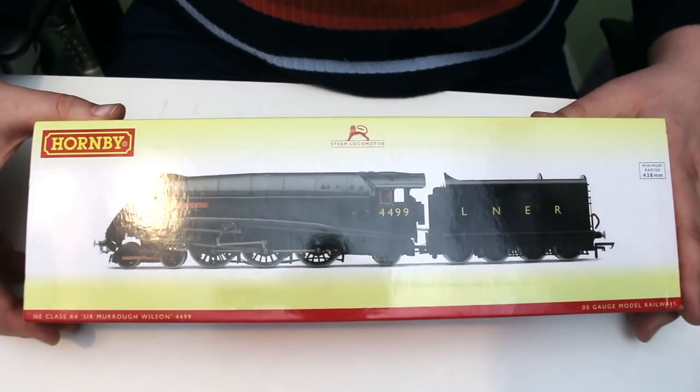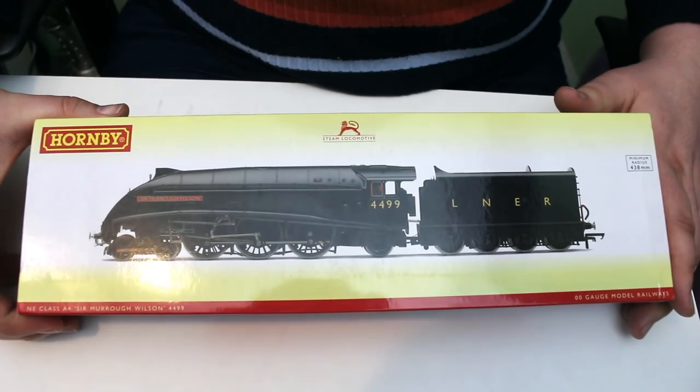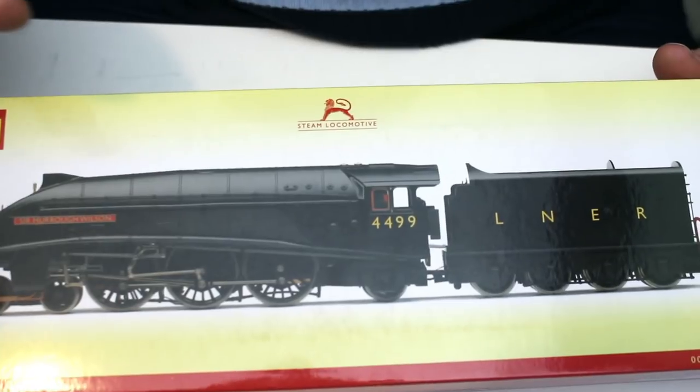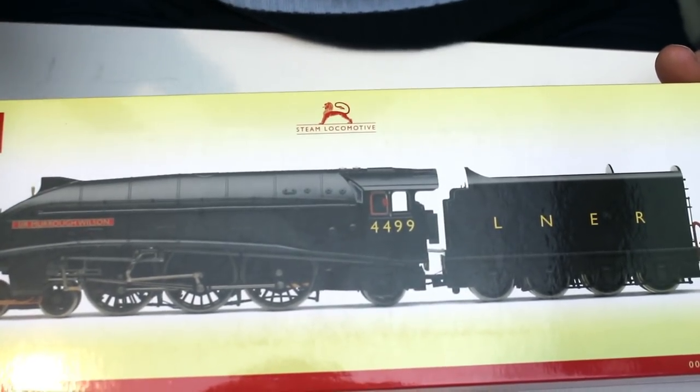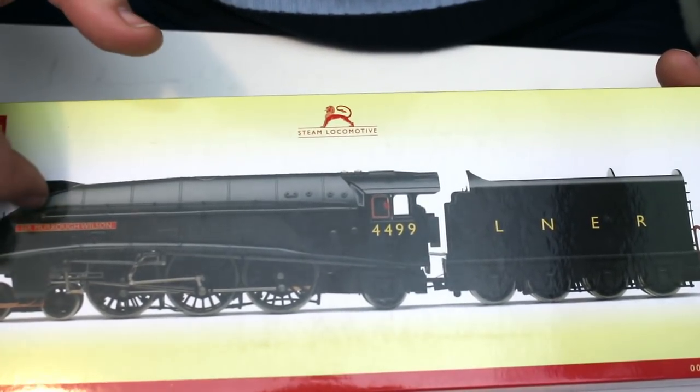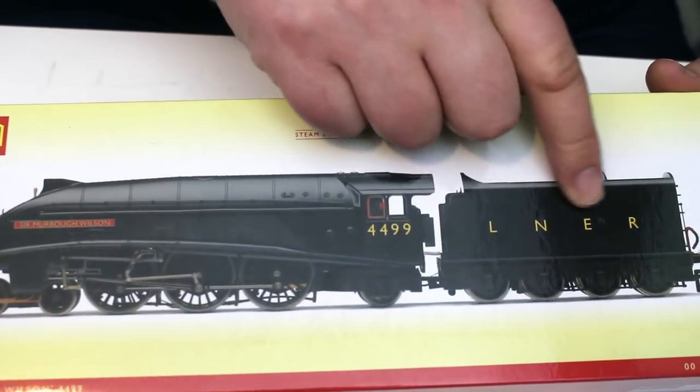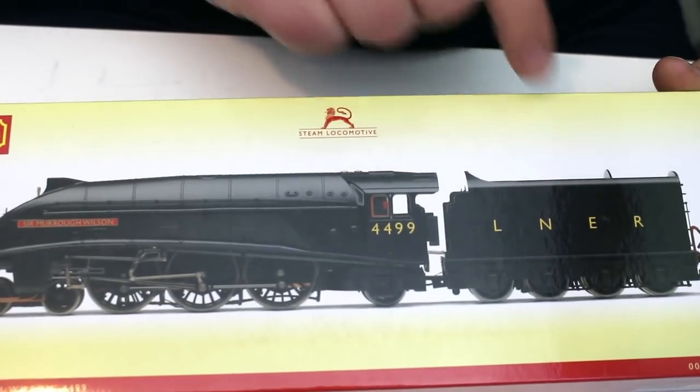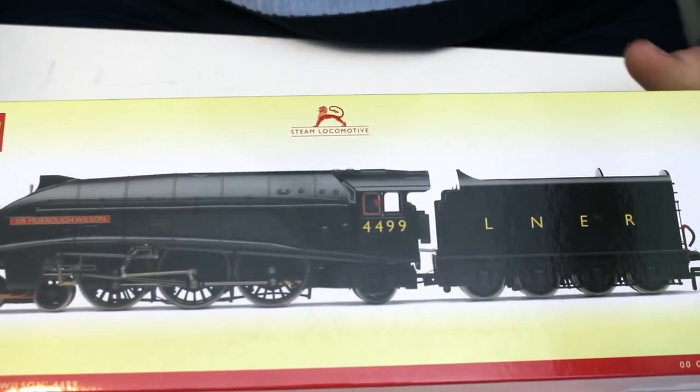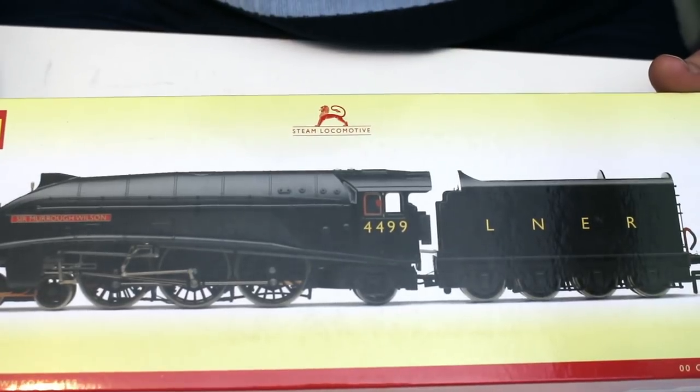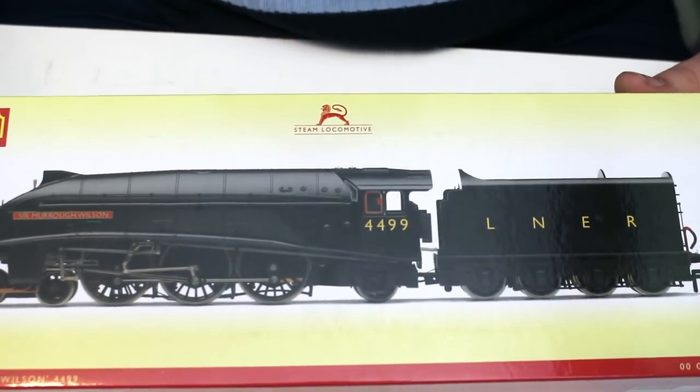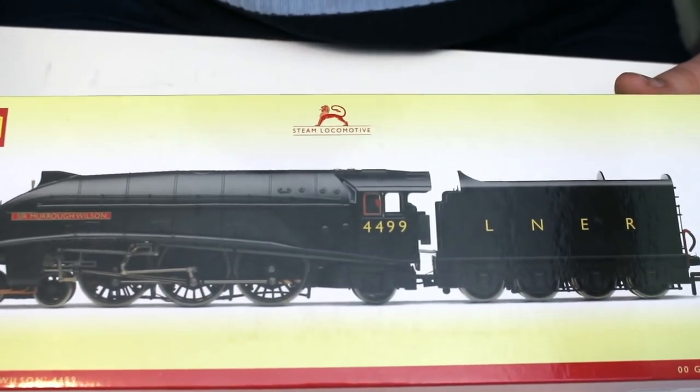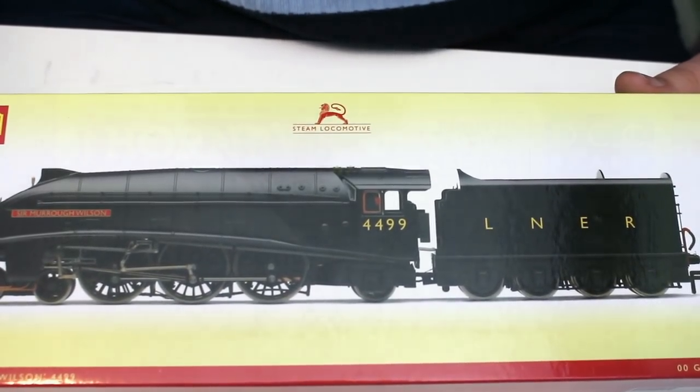So this is the model, it's one of the really excellent Hornby Super Detail A4 Pacifics but this is a bit of an unusual livery, not one that I've seen often in model form and it's the Wartime Austerity Black but with the full LNER on the tender. I have also seen these with just NE as well but it's really interesting to see this unusual livery and certainly a perfect addition for anybody who's wanting to model the Wartime or immediately post-Wartime London and Northeastern Railway.